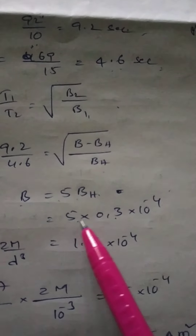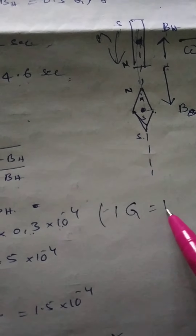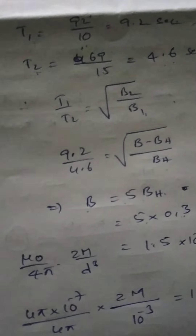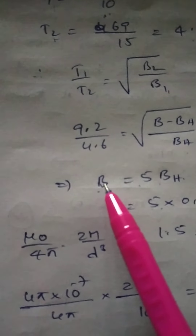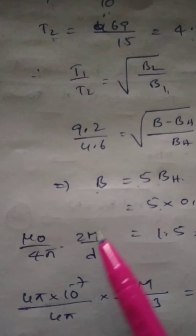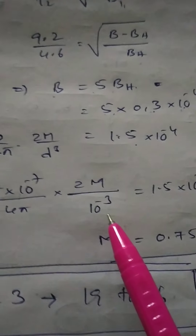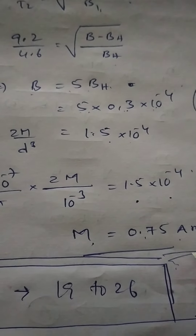B = 5×Bh = 5×0.3 gauss. Since 1 gauss = 10⁻⁴ tesla, B = 5×0.3×10⁻⁴ = 1.5×10⁻⁴ tesla. Now B equals the magnetic induction due to the short bar magnet along the axial line: B = (μ₀/4π)×(2M/d³). Substituting values: (10⁻⁷)×(2M/(10⁻¹)³) = 1.5×10⁻⁴. Solving, M = 0.75 A·m², which is the magnetic moment of the bar magnet.